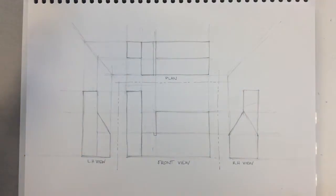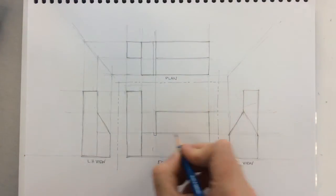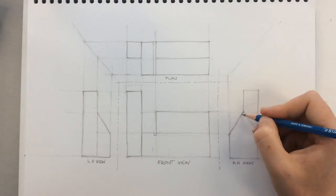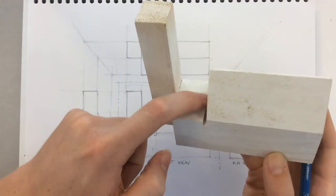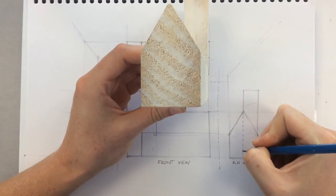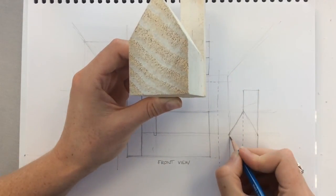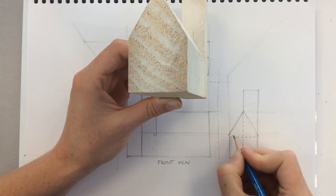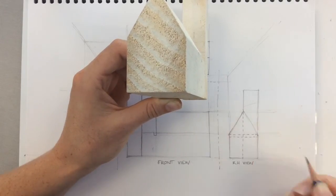The next and last detail is the idea of hidden edges. There are some edges within this form that are not seen in different views but still exist. Be sure to include hidden detail lines.